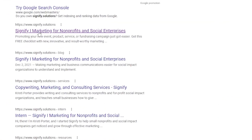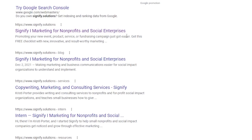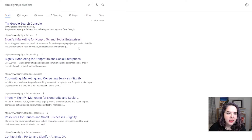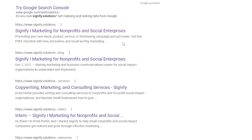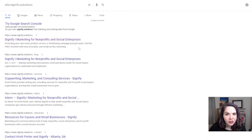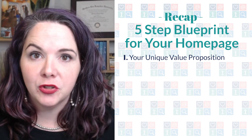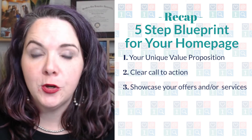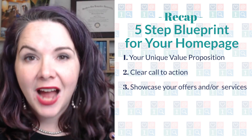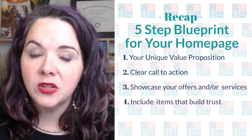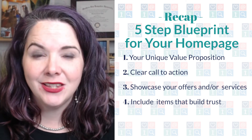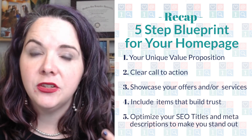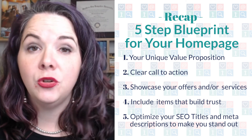Christy's brand 'Signify' has 'marketing for nonprofits and social enterprises' in her SEO title — super clear what she does and who she does it for. Her meta description: 'promoting your new event, product, service, or fundraising campaign just got easier — get this free checklist.' It covers who she works with and how she makes their life easier. Here's the recap: the five-part blueprint for a Google-friendly homepage includes a unique value proposition above the fold, a clear call to action, a showcase of your offers, trust-building elements like testimonials and headshots, and optimized SEO title and meta description.